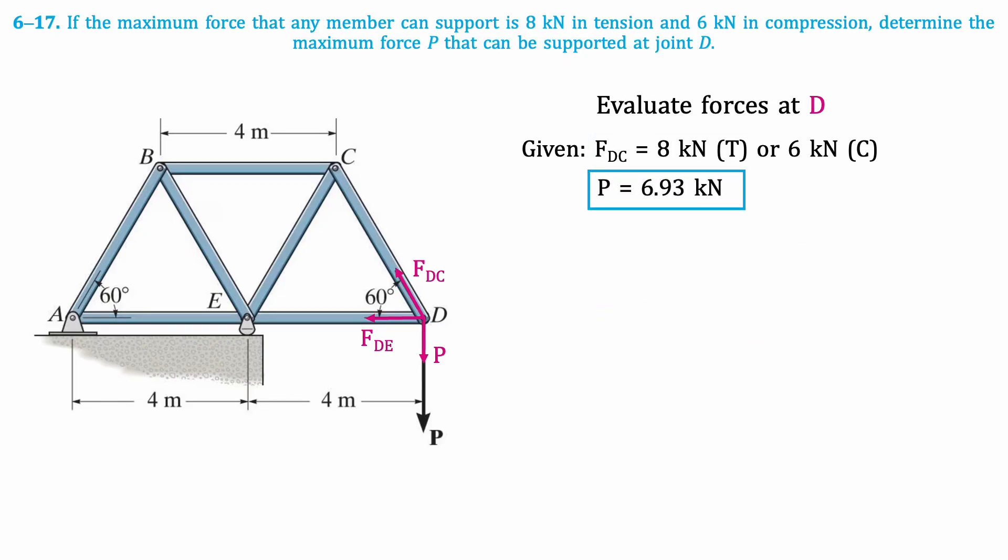and evaluate the resulting value of P if we assume FDC is 6 kN in compression. Since it's a compression force, we have to flip the direction of FDC in our free body diagram.